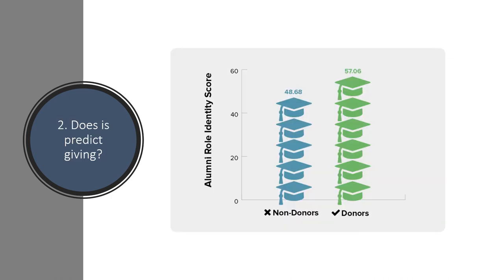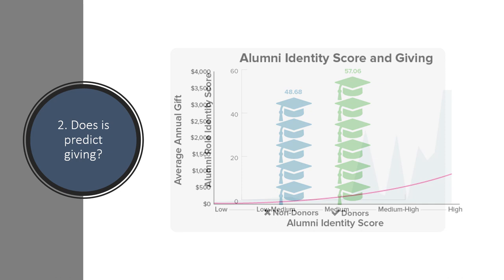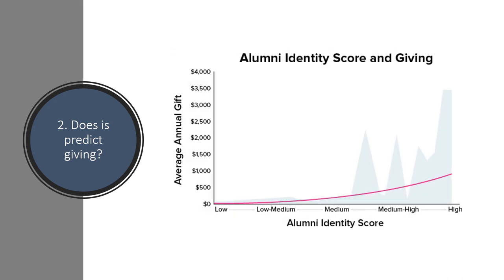Does the alumni identity score predict giving? Here again is a chart from a separate client looking at the average alumni identity score by donor status. Someone who had made a gift to the university has a much higher average alumni identity score than someone who does not — that's almost a 10-point increase in terms of identity between non-donors and donors. And further, check out the average annual gift size based upon alumni identity score. You can see the actual figures in the light blue mountains and valleys, and the trend line in purple. Alumni identity score is an effective and efficient way of predicting not only whether or not someone will become a donor, but how much their annual gift will be.